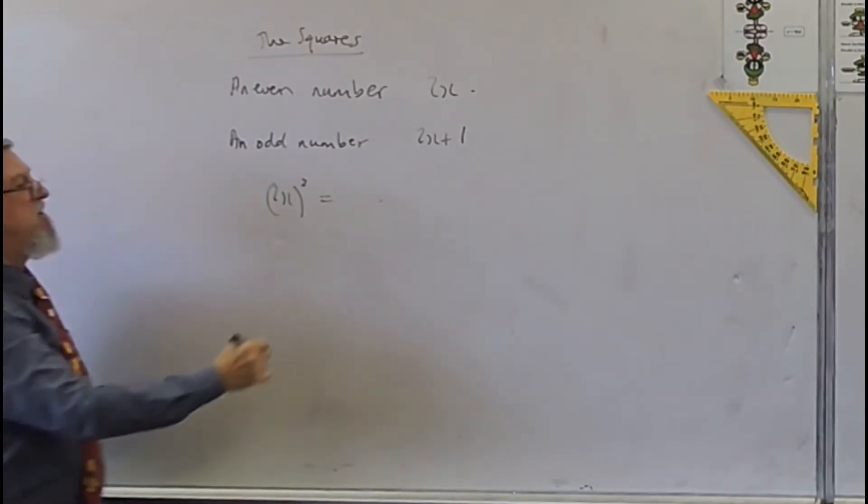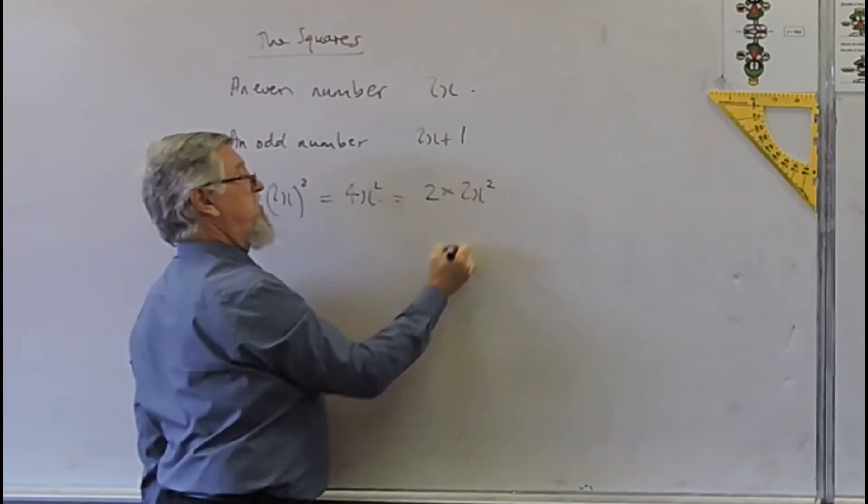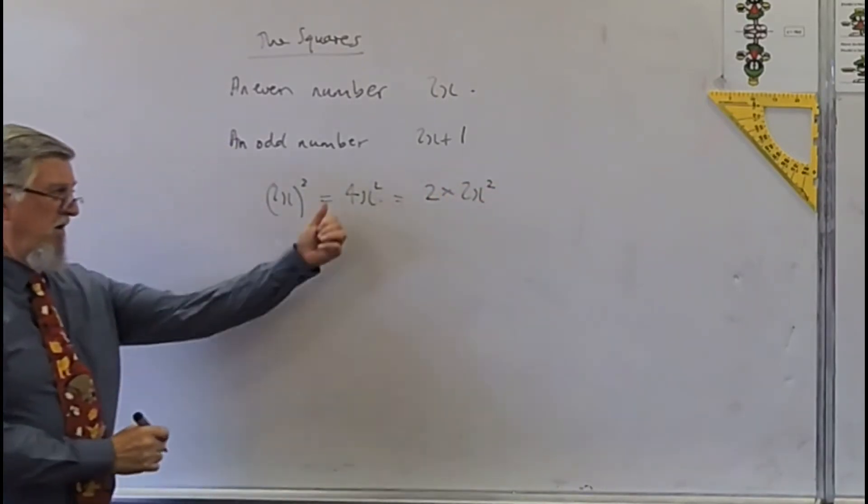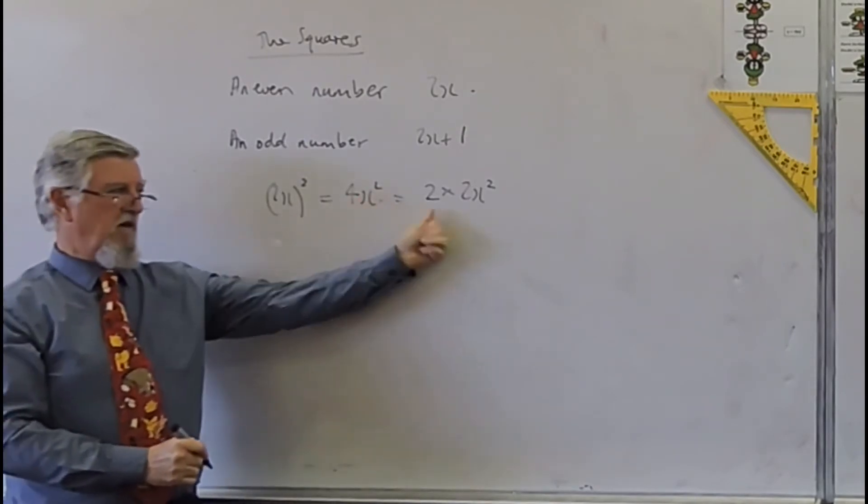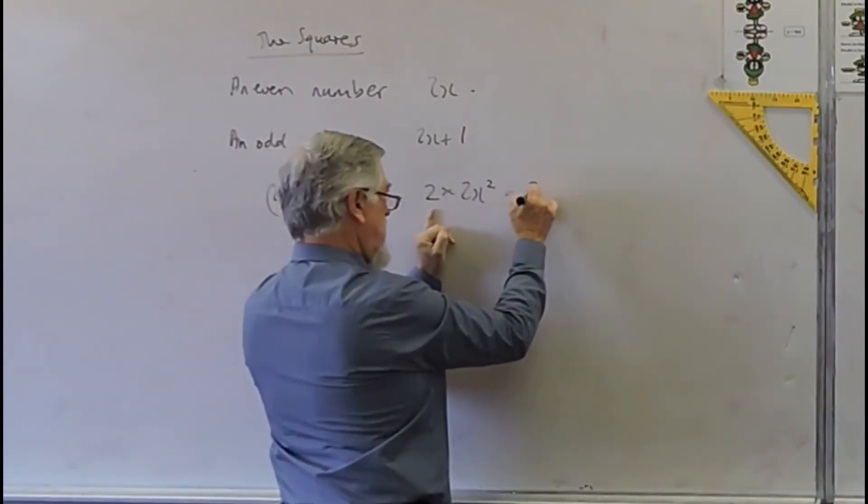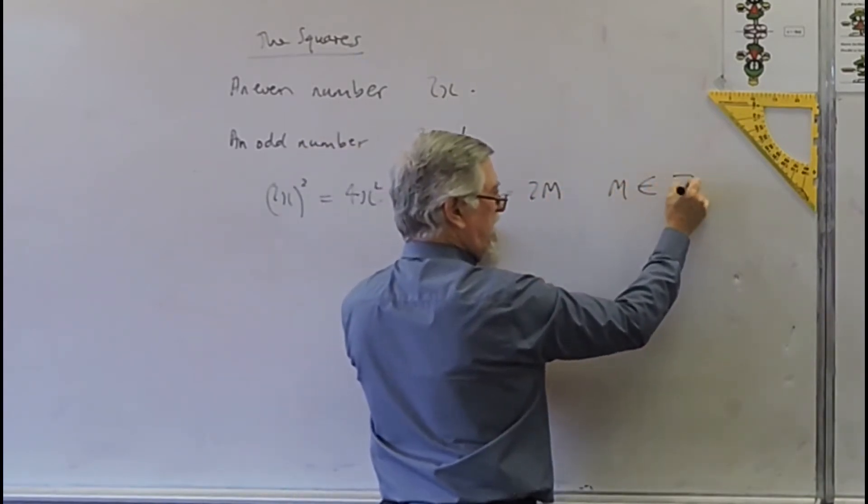So when we square it, we get (2x) squared, which is 2 times 2x squared. I'd probably accept that you would say that's even. I would even go a step further and say, well, that's 2m, where m is an element of the integers.